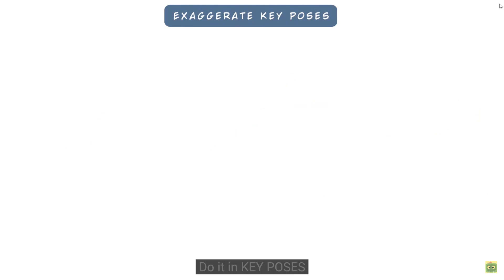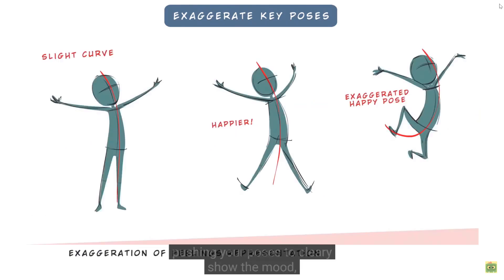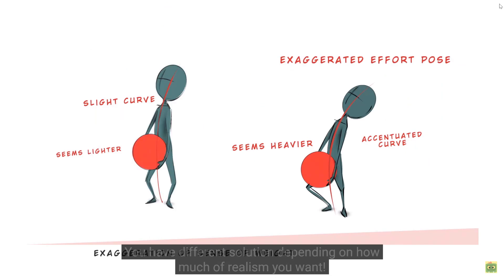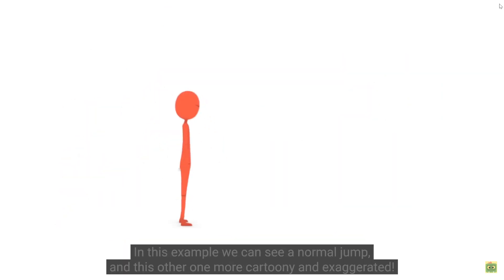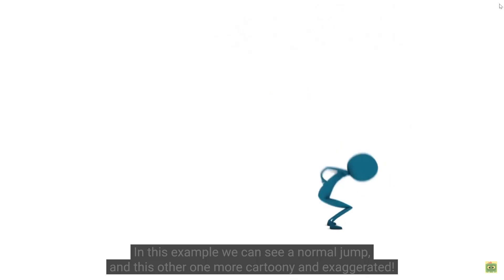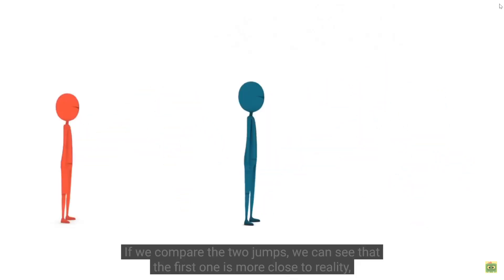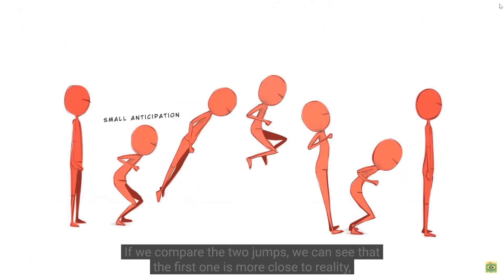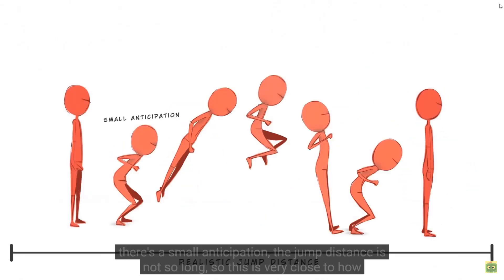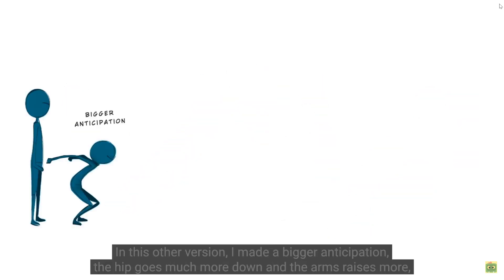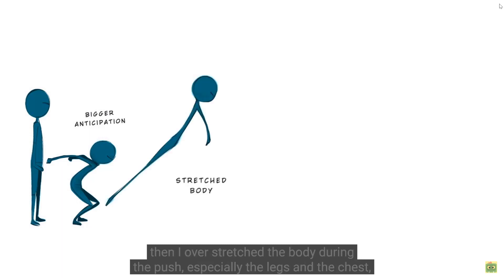Do it in key poses, pushing your poses to clearly show the mood, always based on the style you need. In this example, we can see a normal jump and a more cartoony and exaggerated one. The first one is more close to reality — there's a small anticipation, the jump distance is not so long. In the other version, I made a bigger anticipation, the hip goes much more down and the arms raise more, then I over-stretch the body during the push, especially the legs and the chest.